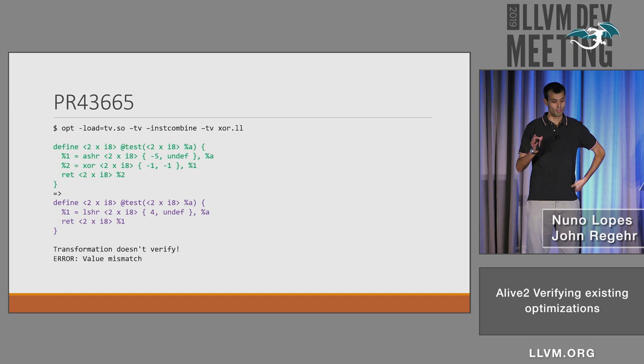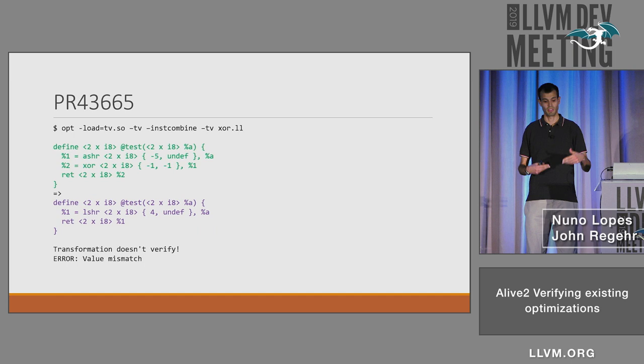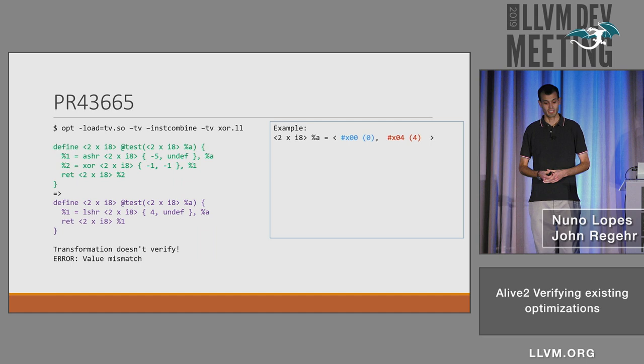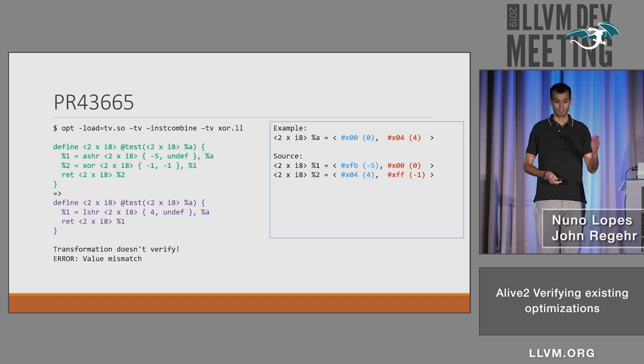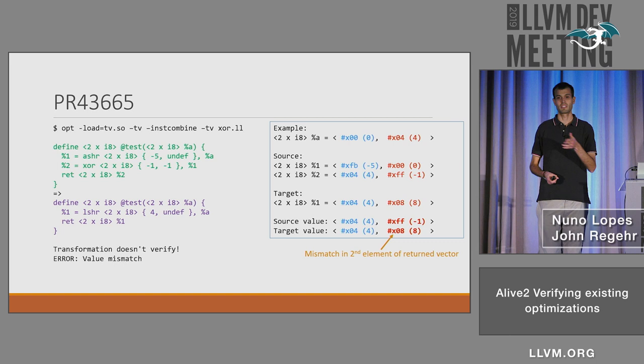You can just call opt-TV -instcombined, and it'll tell you this is wrong because the function now returns a different value — it's called a value mismatch. It gives an example: if you pass the vector [0, 4] as input, the source computes one vector and the target computes something else. The original function returns [4, -1], and after optimization it returns [4, 8]. The first element is correct, but the second element is not.